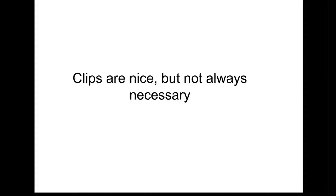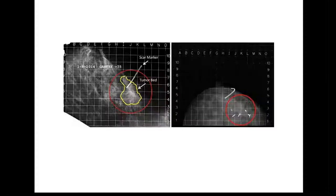Here's a straightforward case: a nice cluster of defined surgical clips. Very easy to position the applicator, and using margin information we weight it slightly toward the nipple-areolar complex. Clips are advantageous but not always necessary — with experience we can identify post-operative changes on image guidance films. Even in the right-hand panel where the surgeon left clips, you can still see the post-operative change quite readily without them.